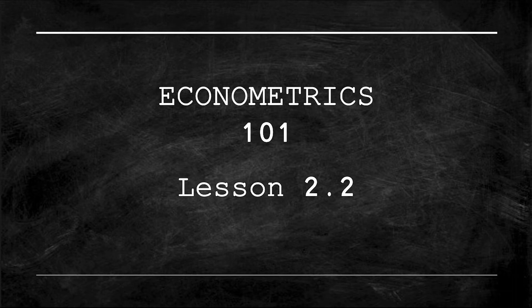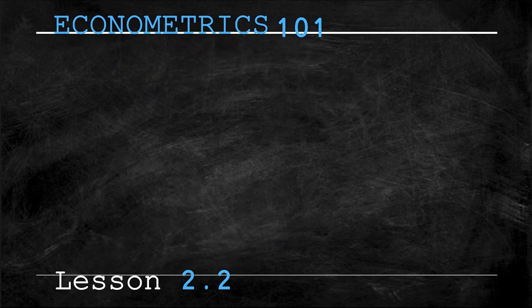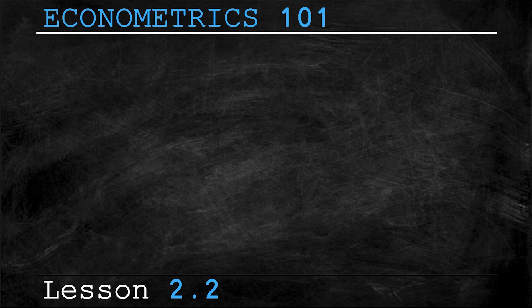Alright everyone, welcome back to the Econometrics 101 series. This week we're covering lesson 2.2, primarily focusing on how to calculate expected values, mean, and variance with some other key concepts sprinkled in as well.